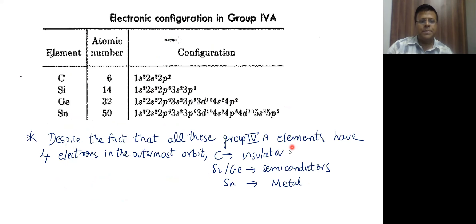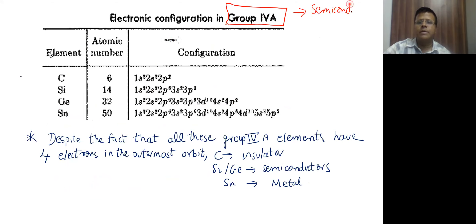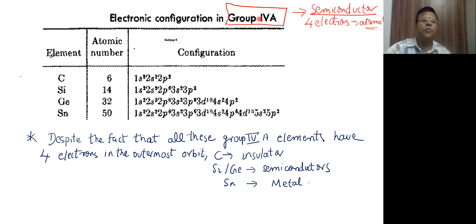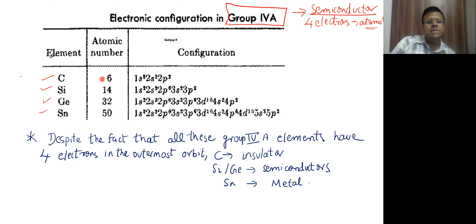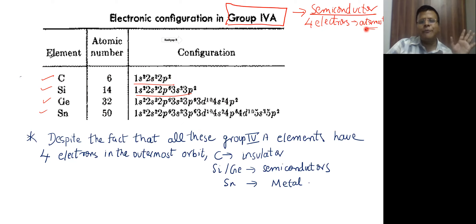If you look at the electronic configuration of Group 4A elements, Group 4A is very special because our semiconductors are picked up from this group. Group 4A means all those elements which have four electrons in their outermost shell. I have taken four elements characteristic of that group, and you can see all of them have four electrons in their outermost orbit — that is one common feature among all these elements.